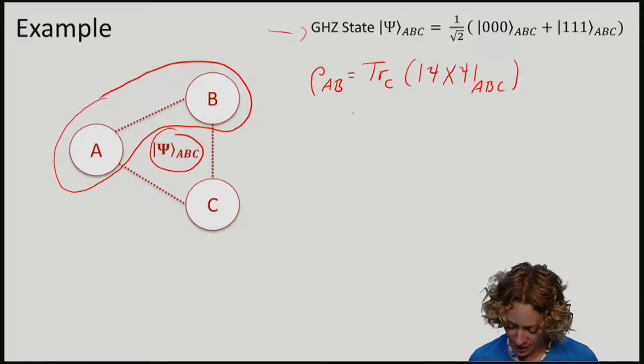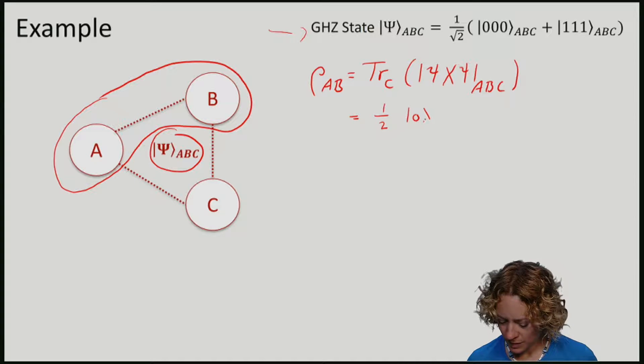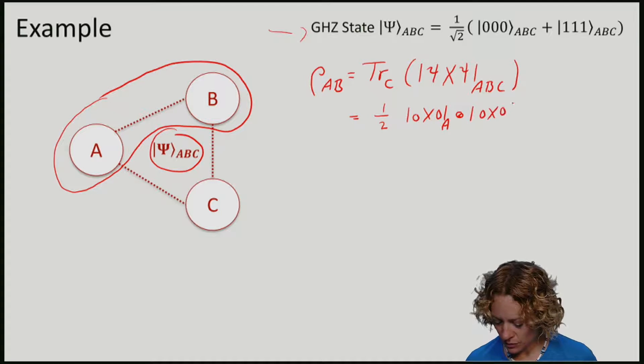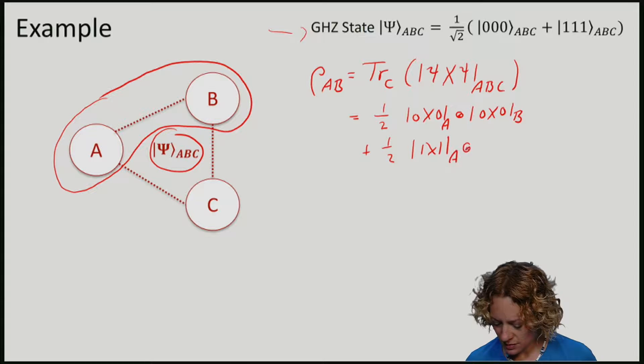what we find is that this state is given by half times 0, 0 on A, tensor 0, 0 on B, plus half times 1 on A, tensor 1 on B.